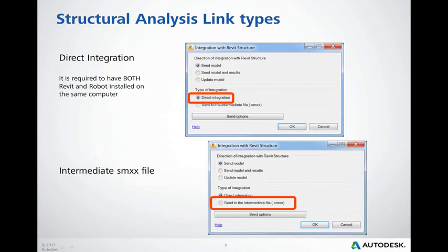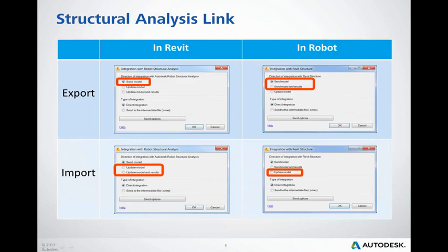There are two methods of model transfer between products. The first is direct integration, where the link connects both programs installed on one computer to exchange data — both must be installed on the same machine. The second is by intermediate file: an SMX file is created so the file can be exchanged between users and computers. Regarding the interface, export means send and import-update means update. For example, importing a model to Revit is the same action as sending the model from Robot.